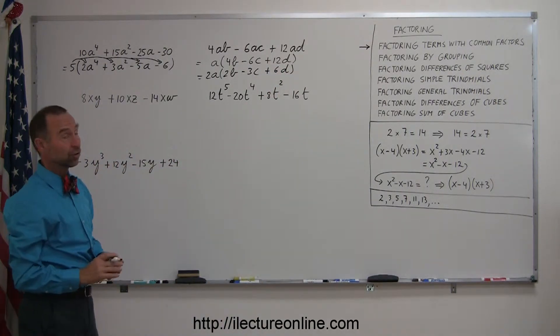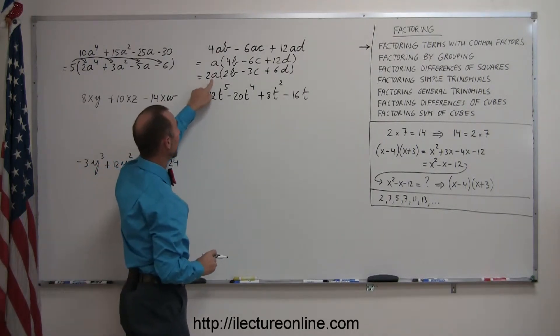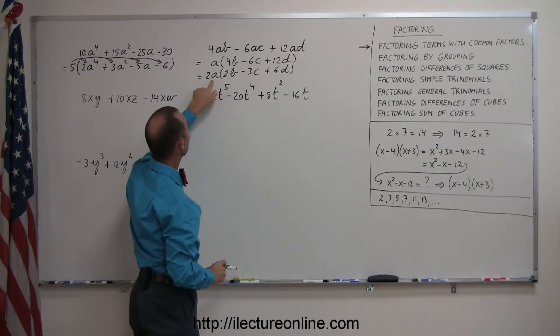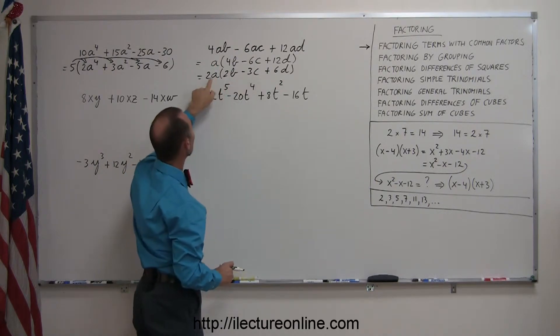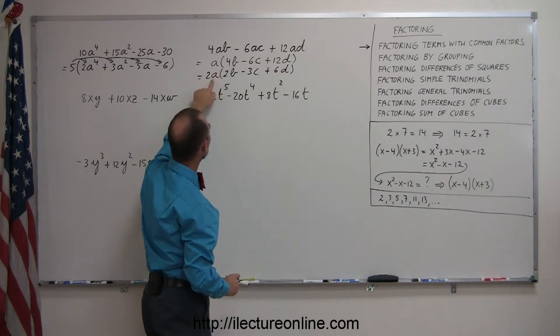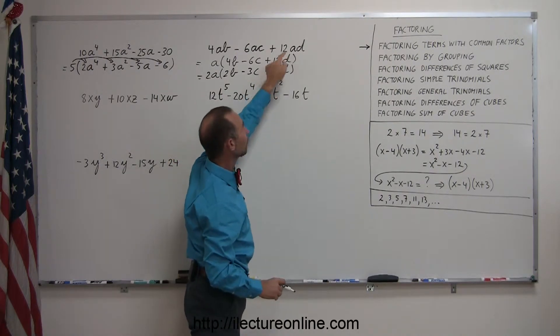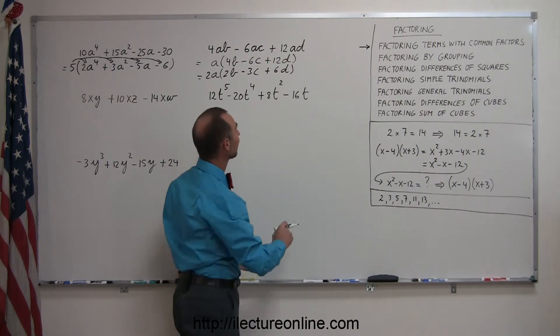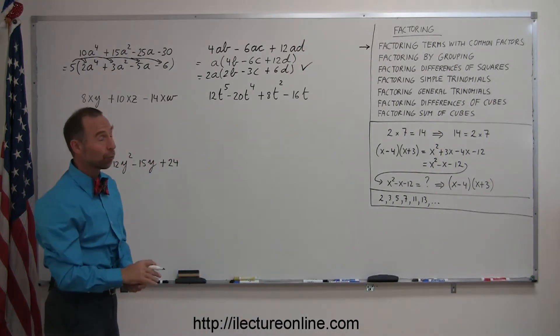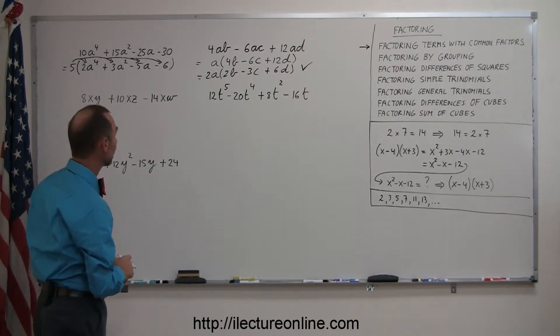And a quick mental check to see if I multiply this back together, I get the original problem back. If I multiply 2a times 2b, I get 4ab, which is what I have over here. 2a times a minus 3c is a minus 6ac, which is what I have over here. And the 2a multiplied times a 6d would be 12ad. That's what I have over there. And again, I did it correctly, so I have this initial problem in its factored form, as we call it, written as a product of its factors.